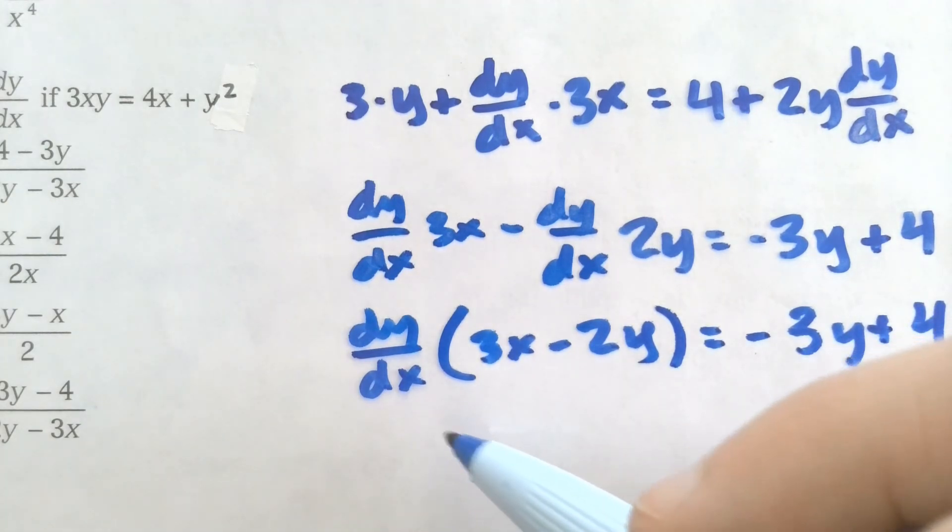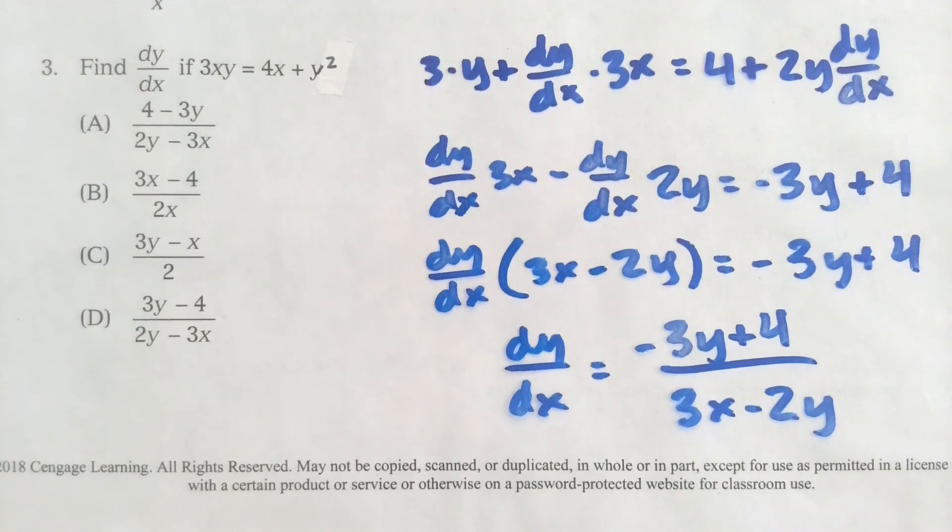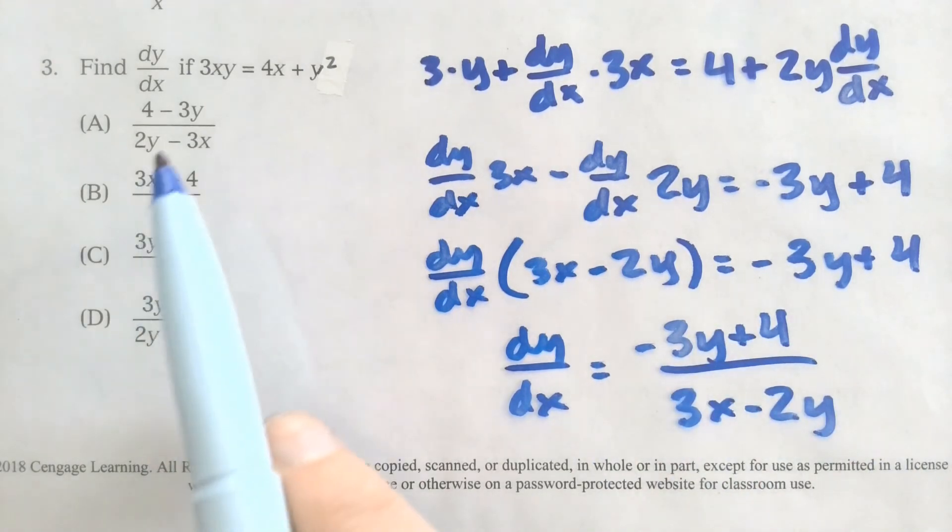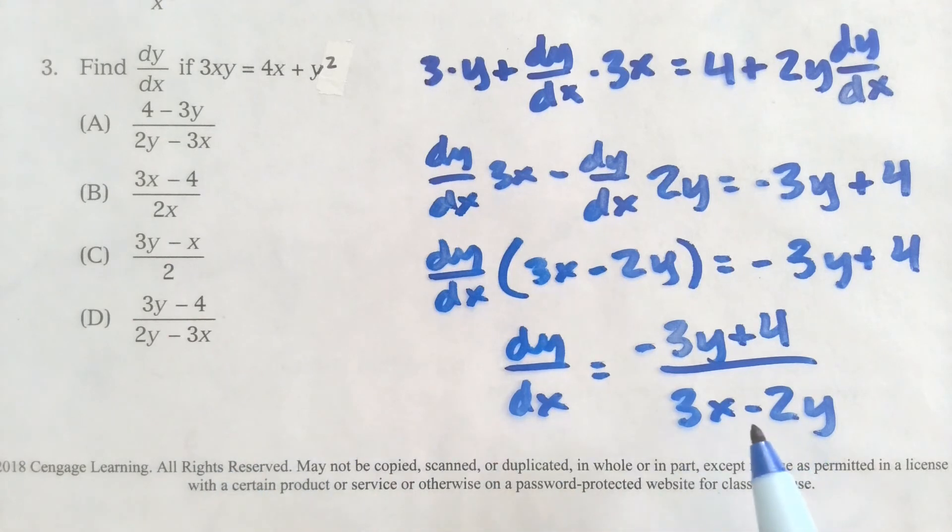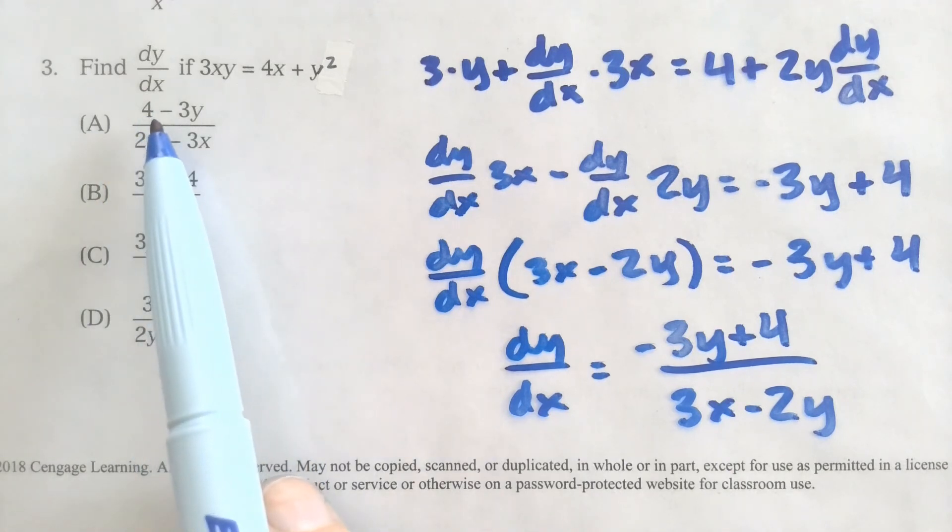Because this way, I can factor out the dy dx and then divide by this 3x minus 2y. So that'll be my last step. And then the beauty of a free response question here is that I can just leave it like that. If it was multiple choice like this, this actually isn't matching any of my answer choices. So I have to make sure,